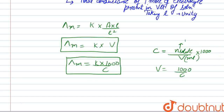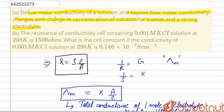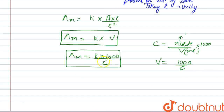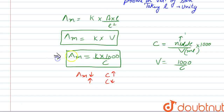From this formula, we can say — as the question asks — how molar conductivity changes with concentration for weak as well as strong electrolytes. We can see that they are inversely proportional: molar conductivity decreases on increase in concentration and increases on decrease in concentration. This inverse effect holds irrespective of whether the electrolyte is strong or weak.